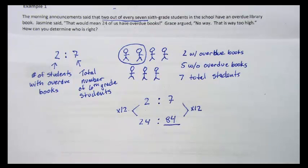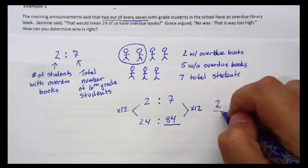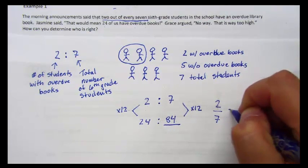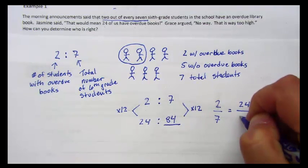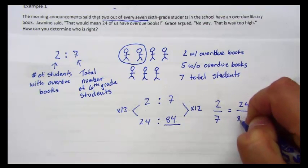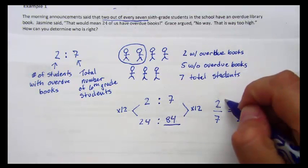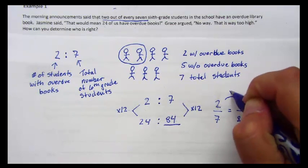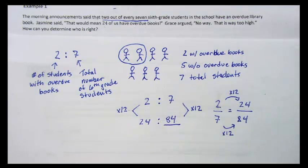We can always look at equivalent ratios like equivalent fractions. If we turn our ratio into a fraction, we know we can multiply the numerator and the denominator by the same value to get an equivalent fraction. Ratios and fractions are very closely linked.